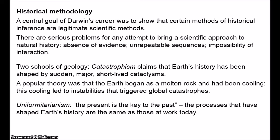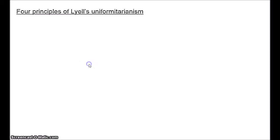Charles Lyell was the foremost defender of uniformitarianism, and he was in many ways Charles Darwin's intellectual hero. In his book Times Arrow, Times Cycle, Gould identifies four parts to Lyell's uniformitarianism. These claims are separate, but according to Gould, Lyell conflated them. So there are two methodological claims.